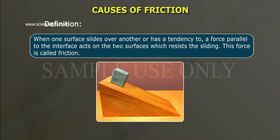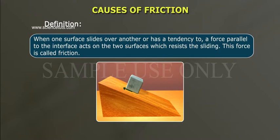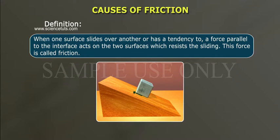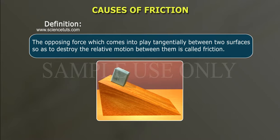When one surface slides over another, or has a tendency to, a force parallel to the interface acts on the two surfaces which resists the sliding. This force is called friction.